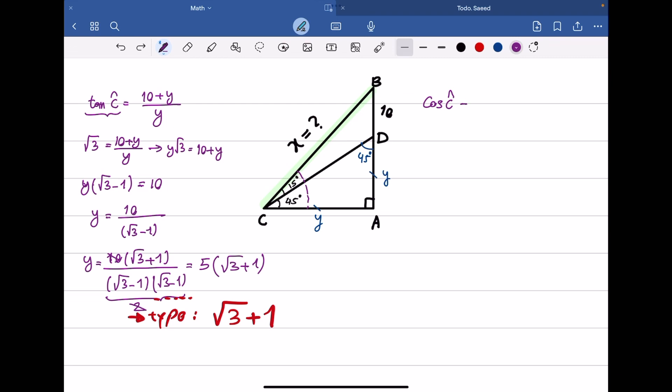Cosine C equals adjacent over hypotenuse, which is Y over BC. Let's call BC as X, so cosine C equals Y over X.